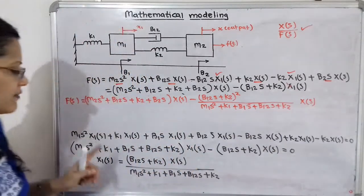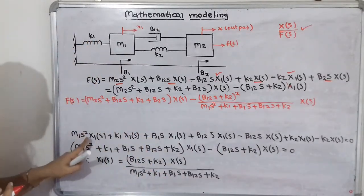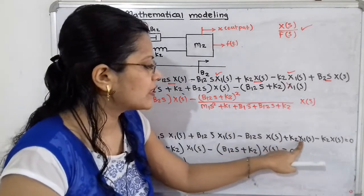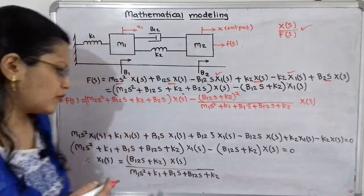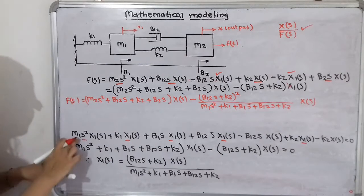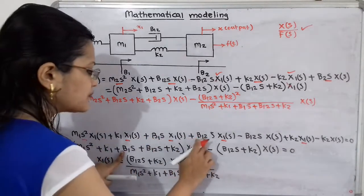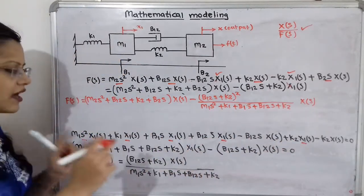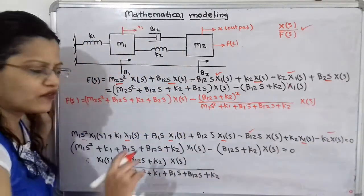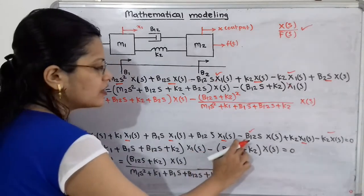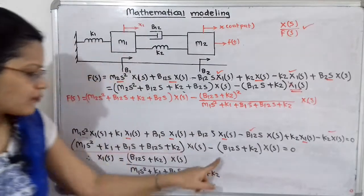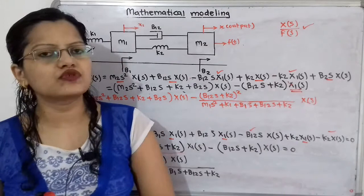Simplifying equation 2: M1·S²·X1(S) + K1·X1(S) + B1·S·X1(S) + B12·S·X1(S) − B12·S·X(S) + K2·X1(S) − K2·X(S) = 0. Grouping: [M1·S² + K1 + B1·S + B12·S + K2]·X1(S) − [B12·S + K2]·X(S) = 0.